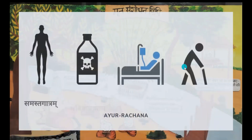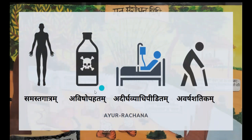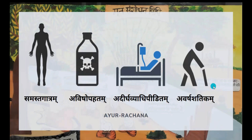Let's revise the selection criteria once more. Samastha Gatram — an intact body with all body parts. Avisho Bahadam — should not be dead due to any poison intake. Adirga Vyadipedikam — without any chronic illnesses. Avasa Chathikam — should not be aged more than 100 years. And Nisrishta Andhra Purisham — the bowel should be cleared of all fecal matter.